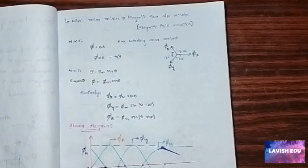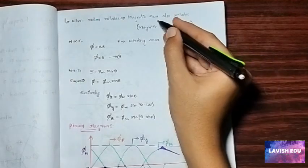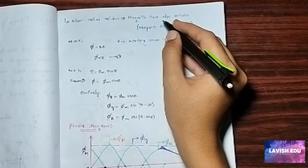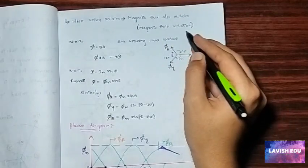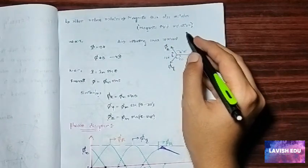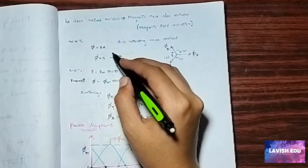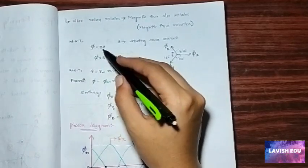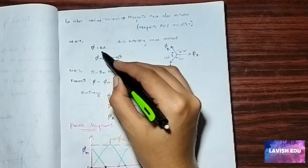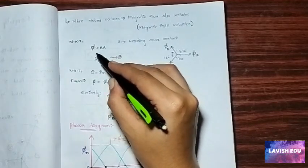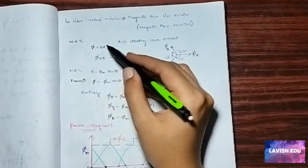When rotor rotates, magnetic flux also rotates as rotor is in the form of the magnetic flux direction. Magnetic flux also rotates, that is magnetic field rotation takes place. We know that the formula is flux is equal to BA where flux is directly proportional to the magnetic field generated.